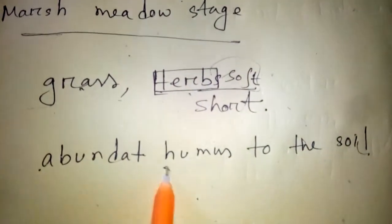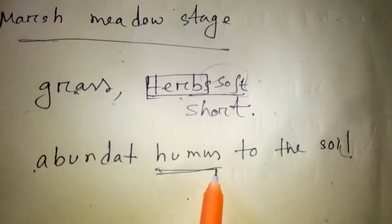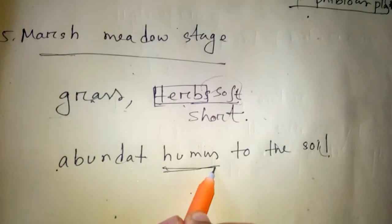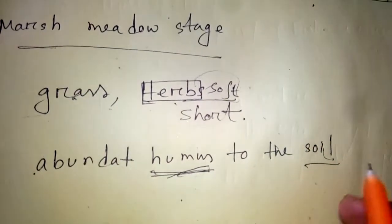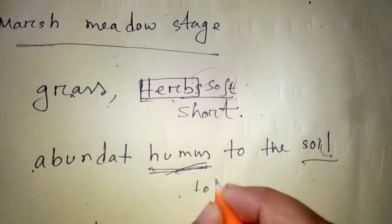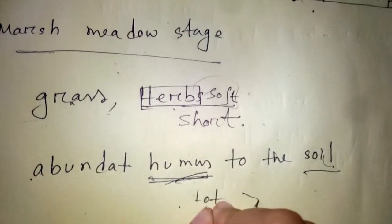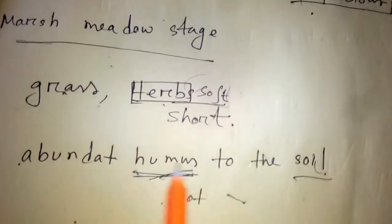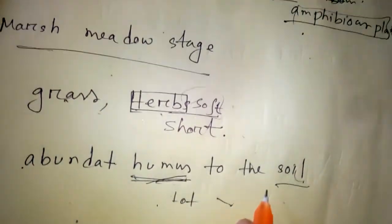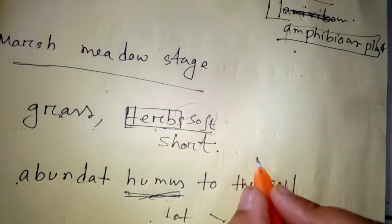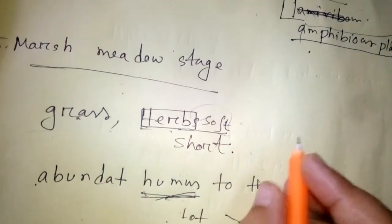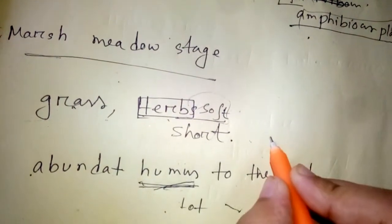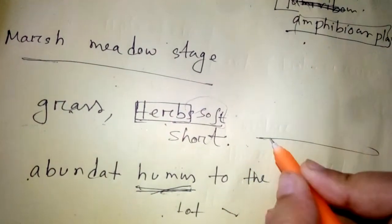Humus is very important to plants. Humus soil has a lot of organic matter. When soil is abundant with humus, then marsh meadow stage grows and herbs grow on soil.